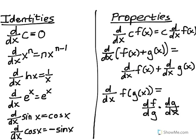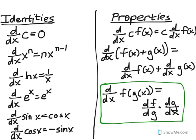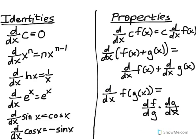Last but not least is a property that we will get into later — I just want to have it on the list — and that's the chain rule. But before we get into the chain rule, let's practice the properties and identities that you should already be familiar with.